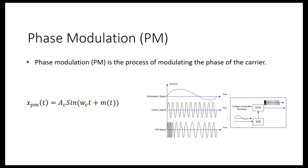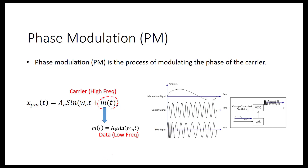The last one is phase modulation. This time we imagine our carrier has a phase, and we try to put our data inside the phase of the carrier. So M(t) equals the data. Phase modulation is actually very close to frequency modulation because we are also changing the frequency. The only difference is that in FM we connect the data signal directly to the VCO, but in PM we take a derivative of the data first and then connect it to the VCO to produce the phase modulation.